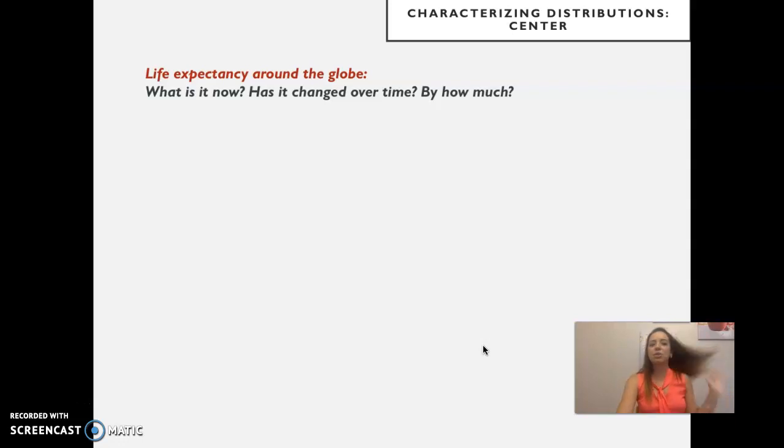So life expectancy around the globe. What is it now? Has it changed over time and by how much? We said that to characterize distributions, the histogram is a really nice way of visualizing how the data density at different values of the variable of interest. But it would be nice to attach a number to that distribution. So shape is one way to characterize it. But then it would be nice to have some way of summarizing what's typical of that distribution. What's a point estimate that would tell me about, on average, what am I looking at in terms of life expectancy?